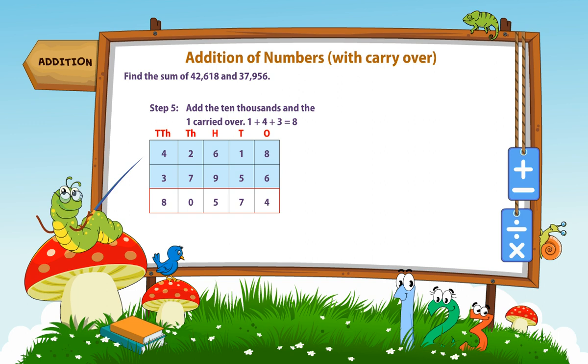Step 5. Add the ten thousands and the one carried over. 1 plus 4 plus 3 is equal to 8.